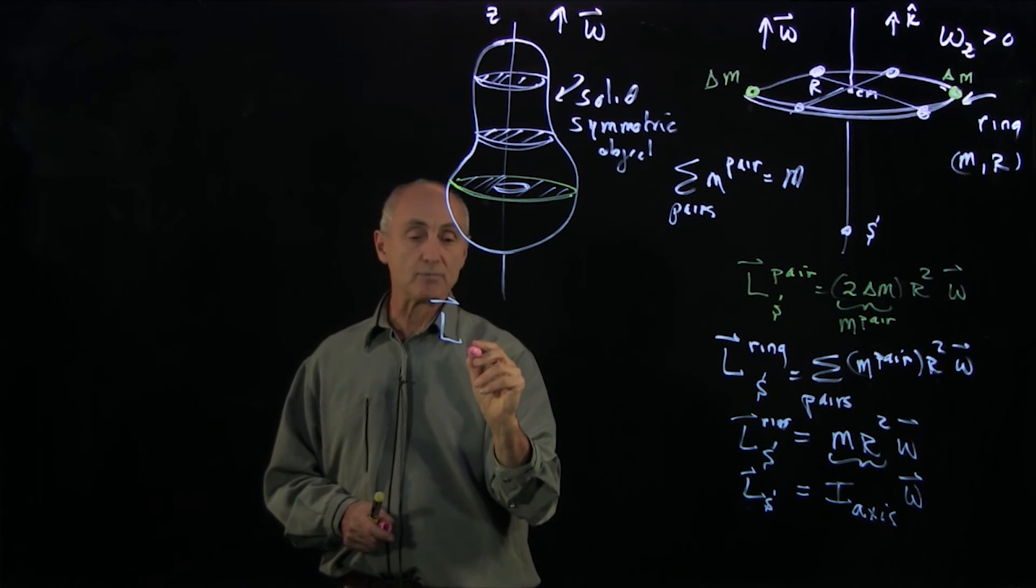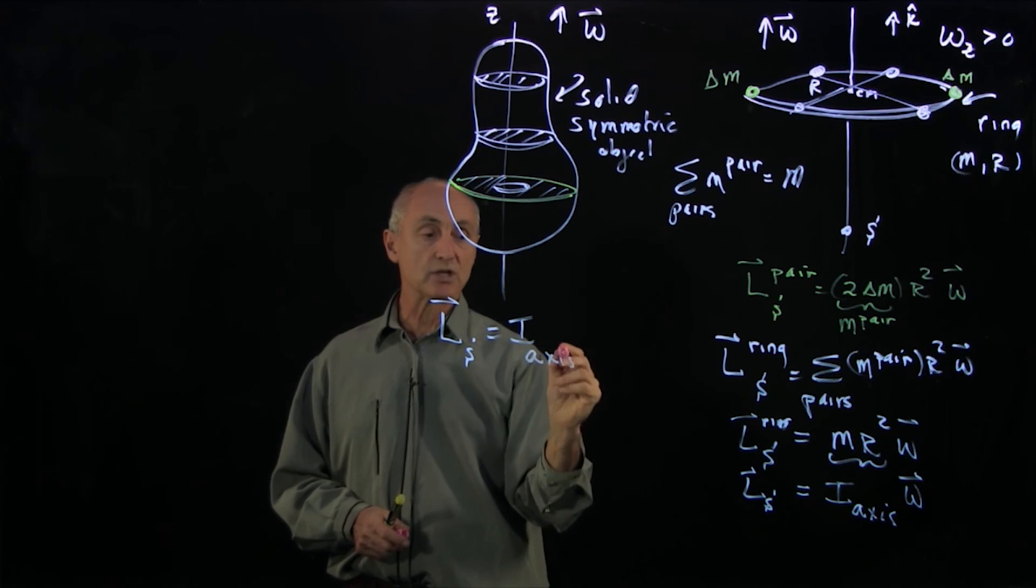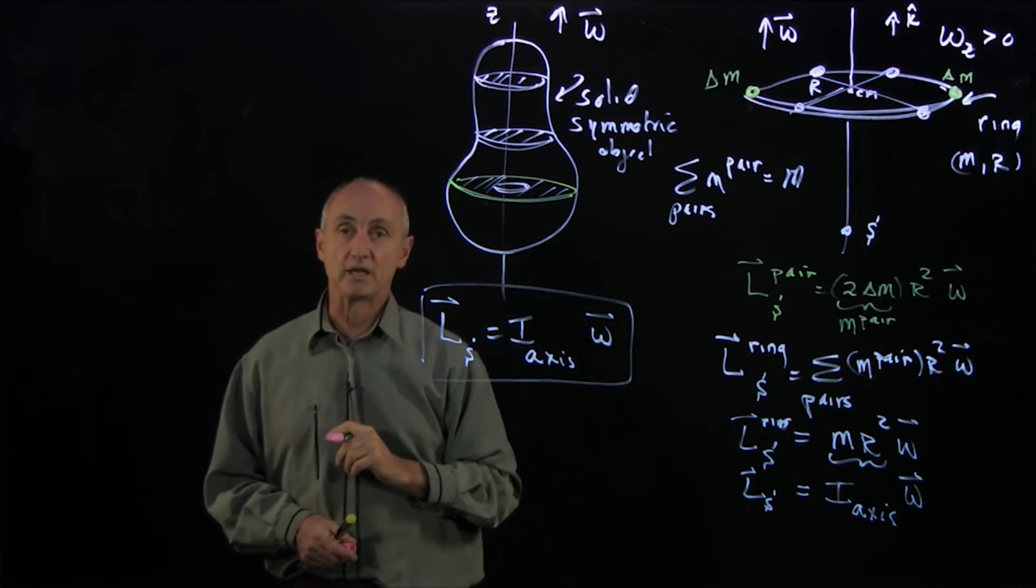And so by exactly the same calculation as I have here, the moment of this symmetric object is just the moment of inertia, which is more complicated for this object, and it points in the omega direction.